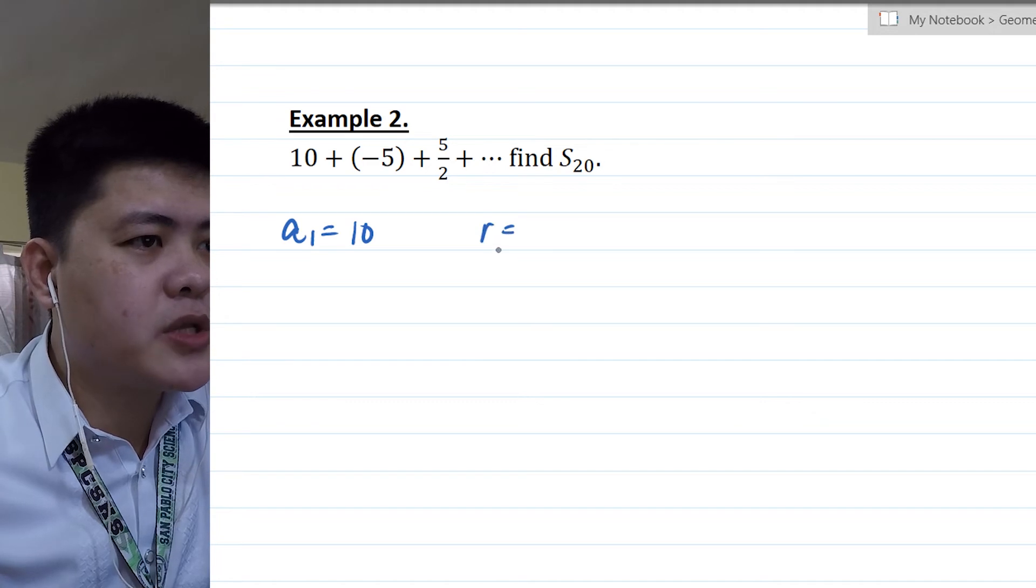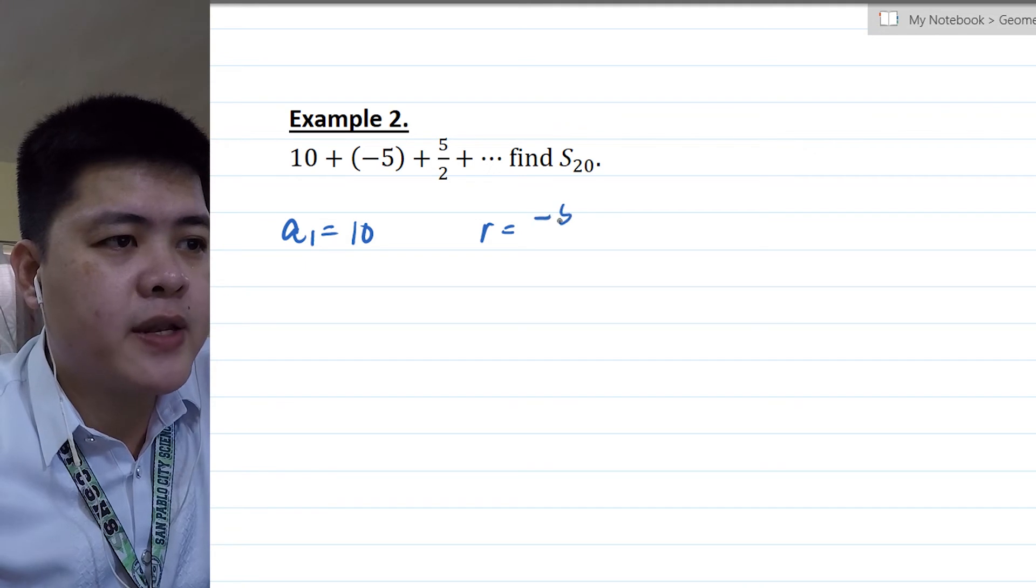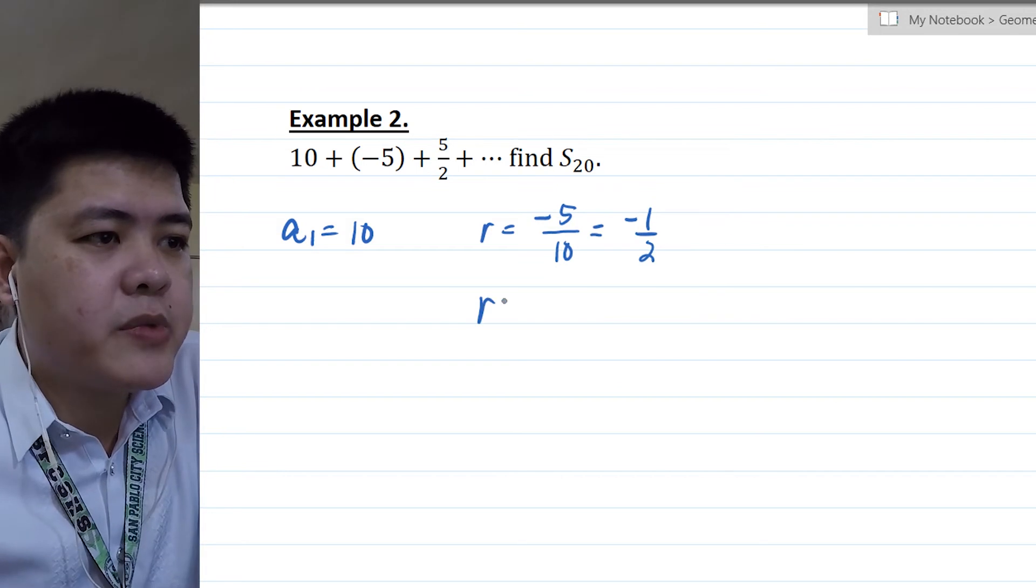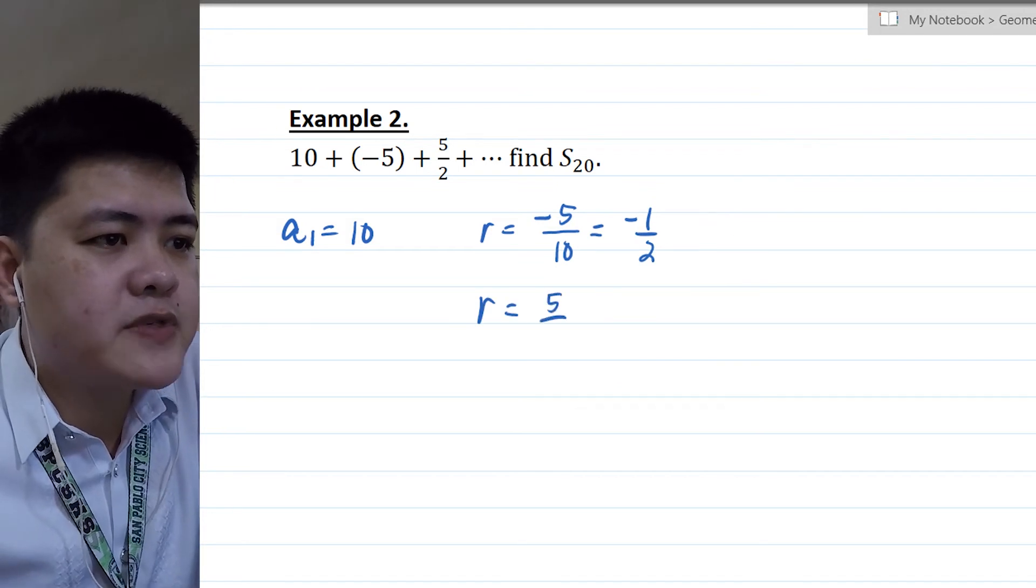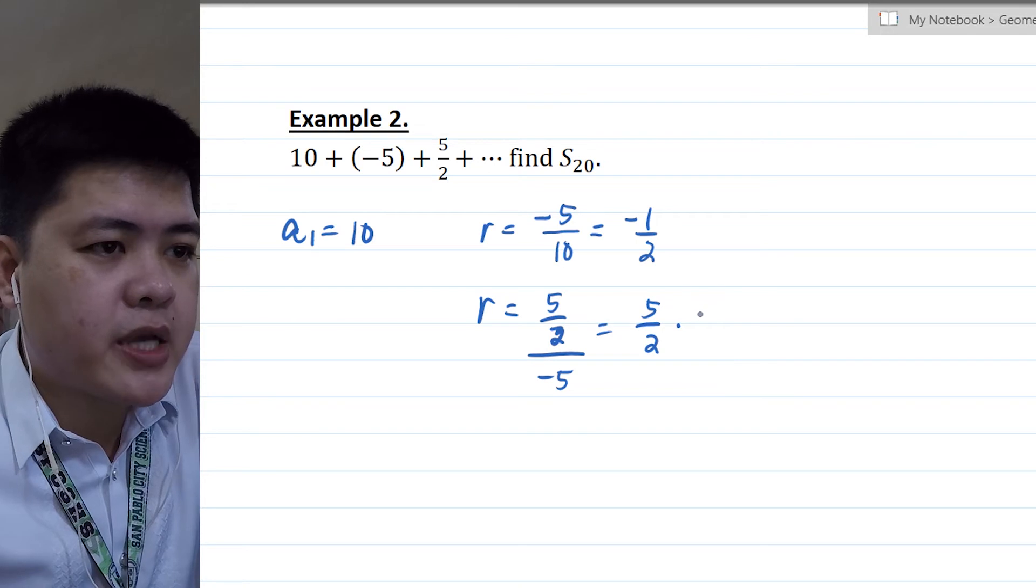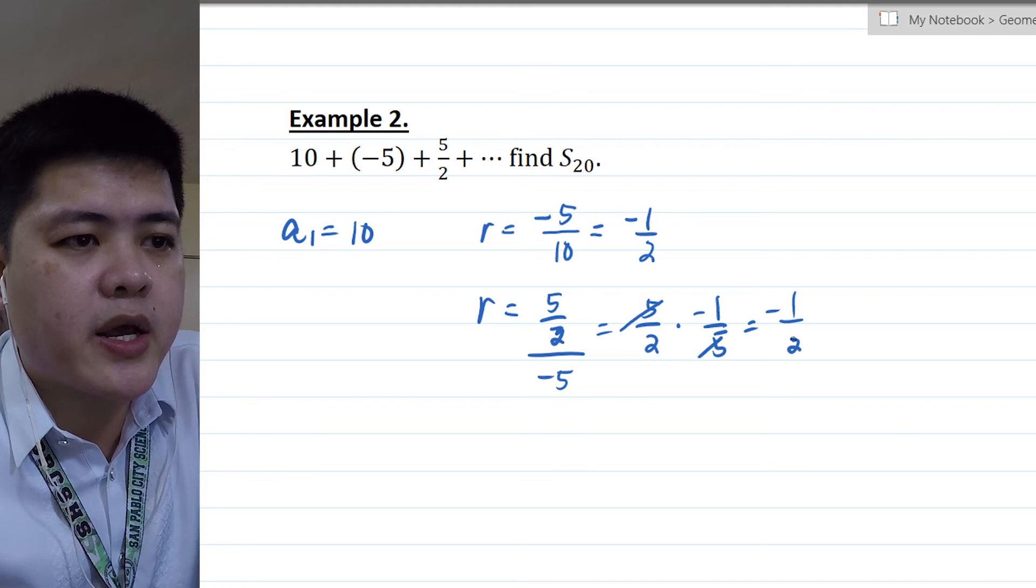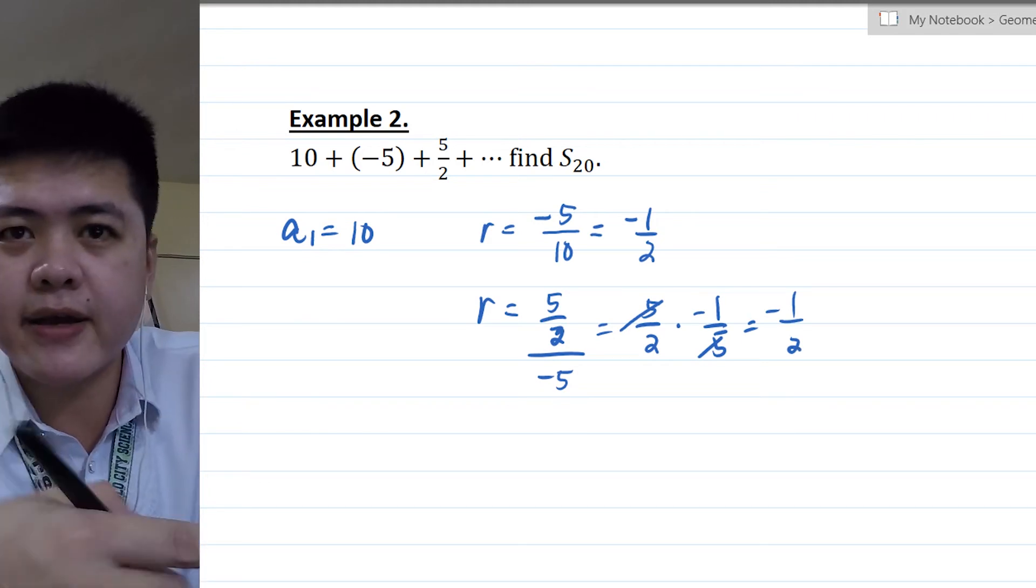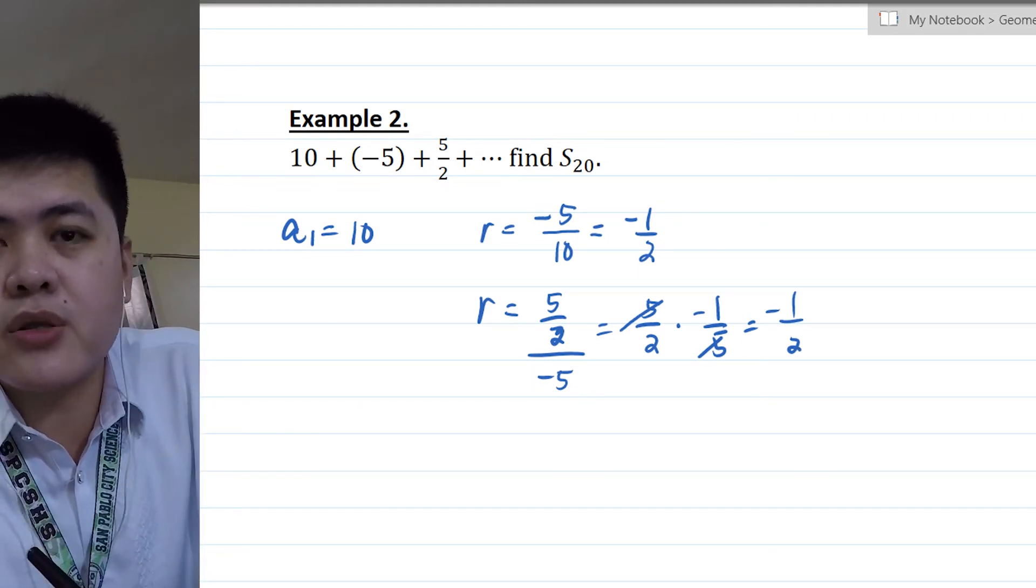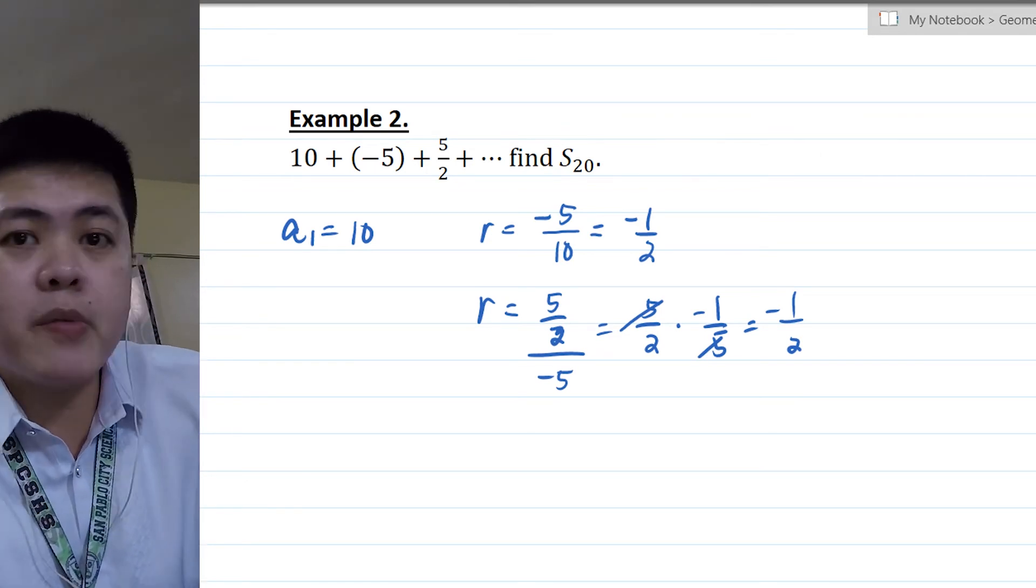So common ratio is equal to negative 5 over 10, which will give us negative 1 half. The other one will become r equals 5 halves divided by negative 5, which is equivalent to 5 halves times negative 1 over 5. So the common ratio is negative 1 half. So it's important to check if it's a geometric series, because if it's not a geometric series, then you can't use the formula. So in this case, our common ratio is negative 1 half.